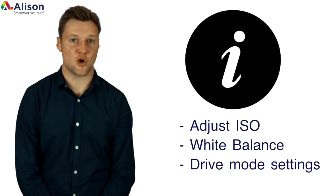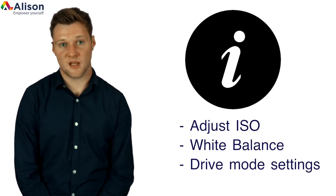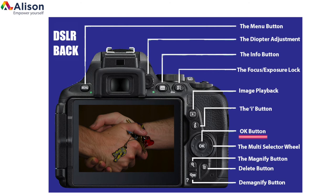You will use this when you need to manage adjustments such as ISO, white balance, and the drive mode settings. The OK button is a simple button that is used primarily for selecting menu items. It's also useful for centering the active focus point, and if you've enabled single point autofocus.